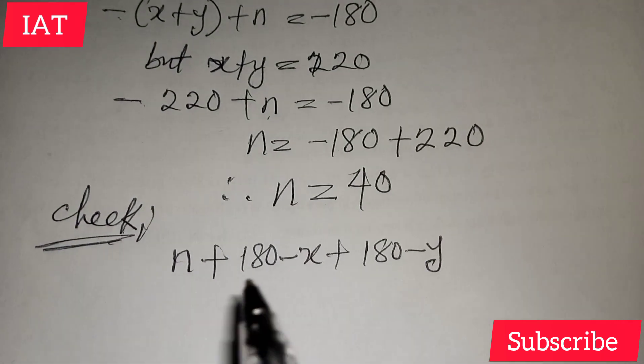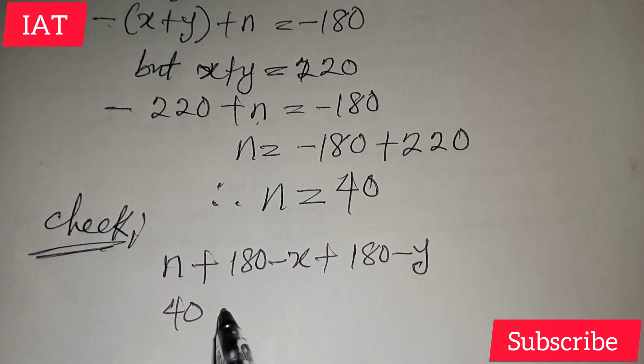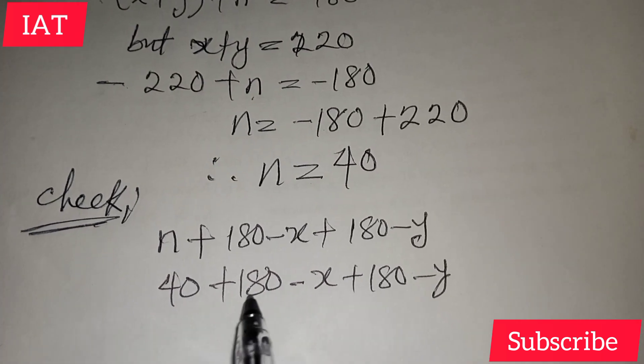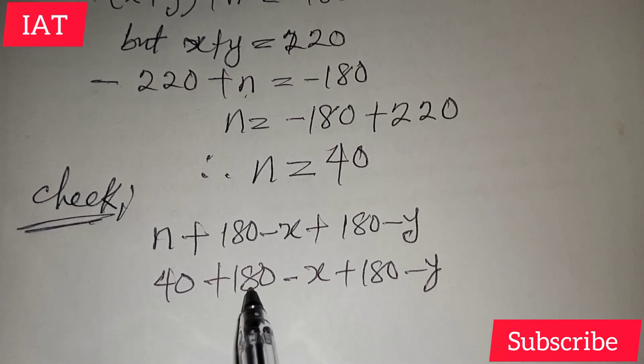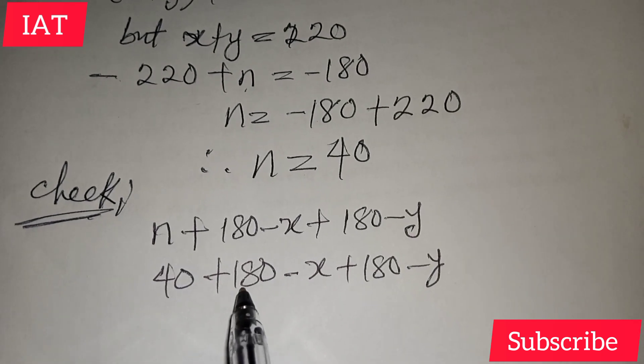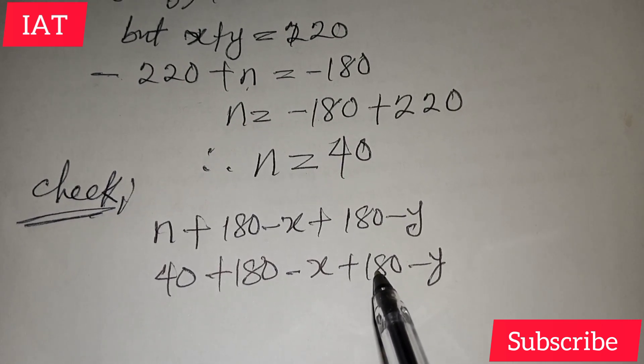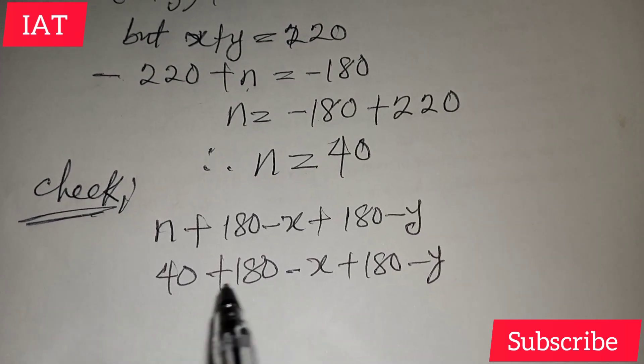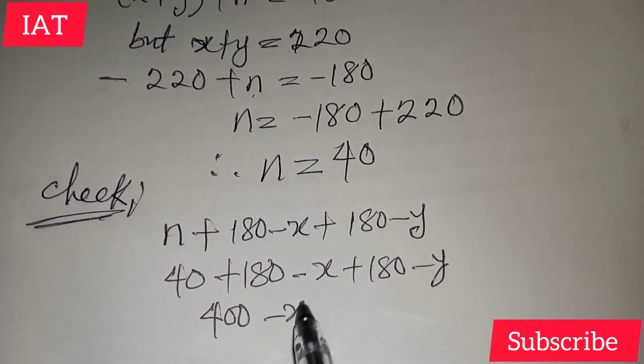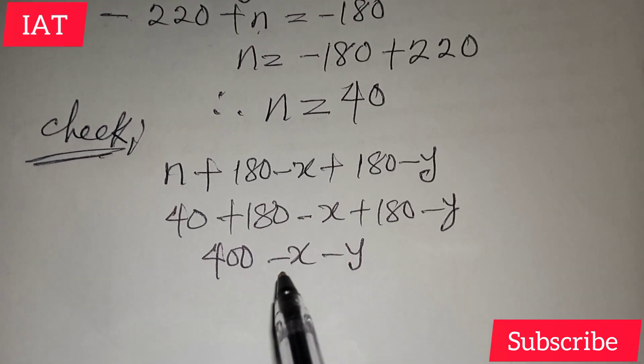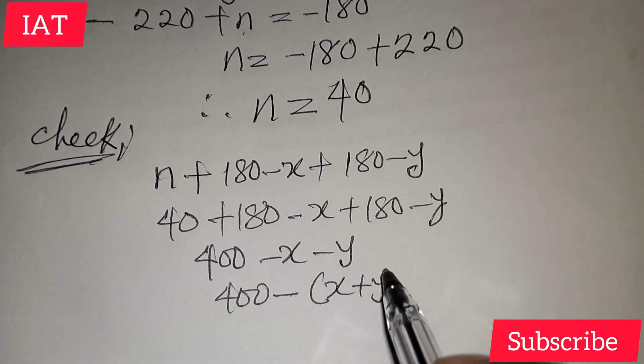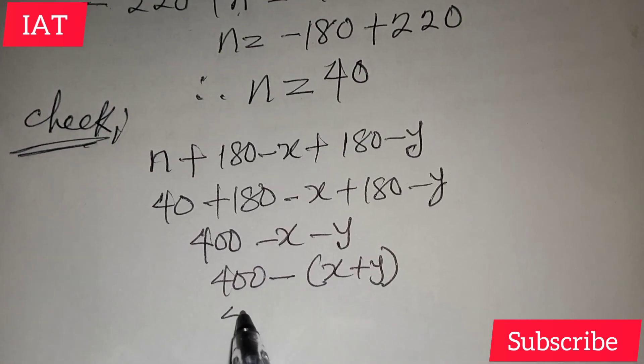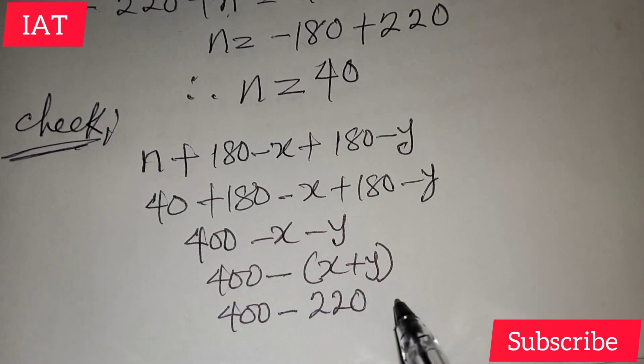We have n already to be 40, plus 180 minus x plus 180 minus y. If you add up 40 plus 180, that gives 220, and adding 180 gives 400. Alternatively, 180 plus 180 is 360 plus 40, minus x minus y. We know that x plus y is 220, so 400 minus 220 gives 180, and sum of angles in a triangle is 180 degrees.